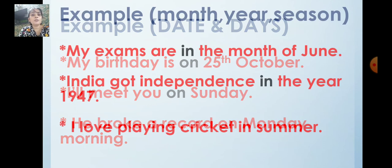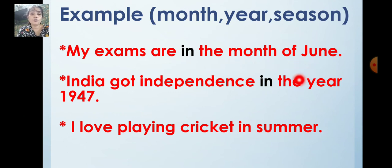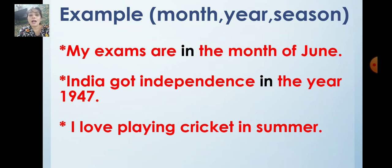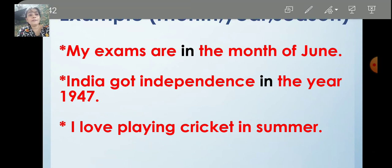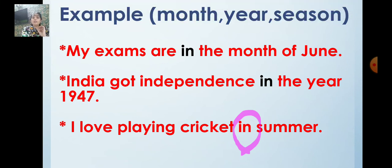Now whenever you see the month, year, or season, you will use the word I-N, 'in'. My exams are in the month of June. India got independence in the year 1947. Whenever you see month and year, close your eyes and write the answer 'in'. I love playing cricket in summer. So in the last sentence, which is the preposition of time? You see the season, so you will use the word I-N, 'in'.